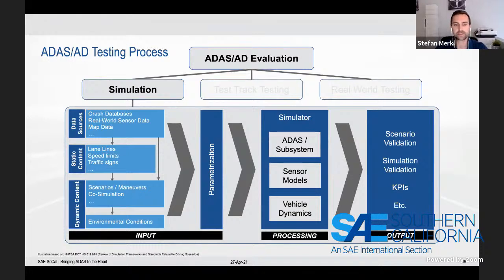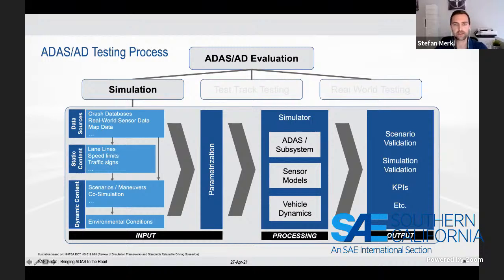In addition to the scenarios, static as well as dynamic content — such as road markings, speed limits, and traffic signs — but also weather and environmental conditions have to be considered for processing. In the simulation, the system and the vehicle response are then calculated with these input parameters.